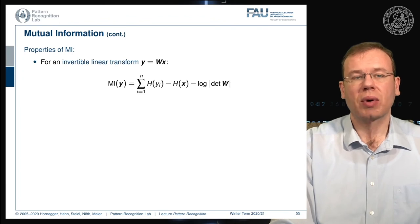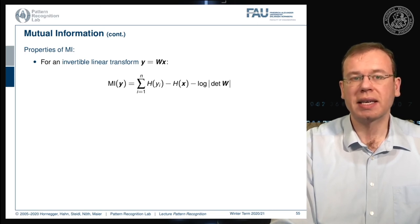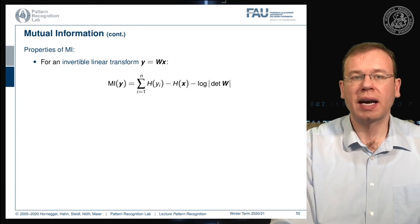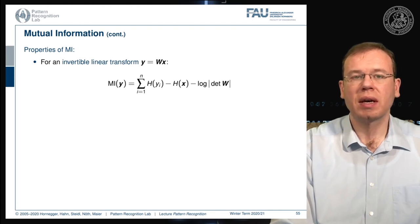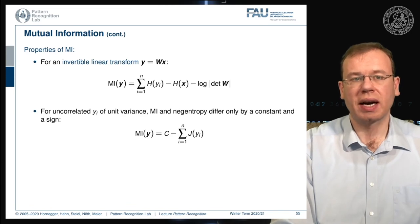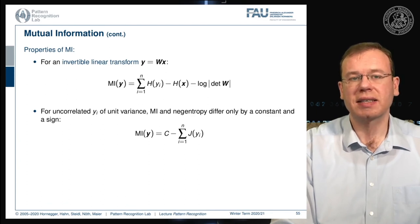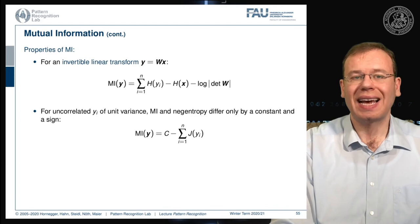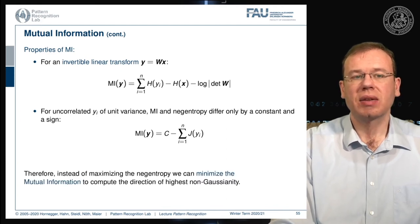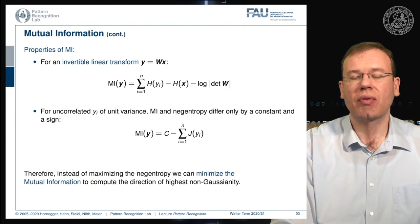For an invertible linear transform Y = WX, the mutual information can be written as the sum over the entropy of Yi, minus the entropy of X, minus the logarithm of the determinant of W. For uncorrelated Yi of unit variance, mutual information and negentropy differ only by a constant and a sign. Therefore, instead of maximizing negentropy, we can minimize mutual information to find the direction of highest non-Gaussianity.